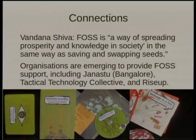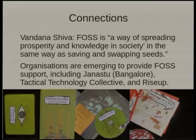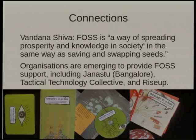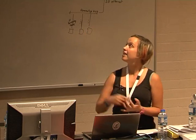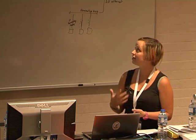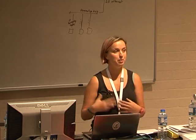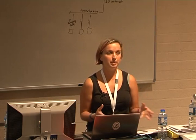We're on to part two: thinking about what's happening already. There are connections being made and people within activist communities are realising that maybe FOSS might be useful. Over the last few years it's starting to pop up in activist discourse. For example, Vandana Shiva — a very well-known figure in the global justice movement and a seed activist in India who campaigns for open seeds freely available to use and share, not controlled by large multinationals like Monsanto — has been saying that FOSS is similarly a way of spreading prosperity and knowledge in society, in the same way as saving and swapping seeds.